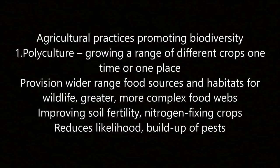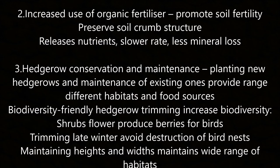Agricultural practices promoting biodiversity: (1) Polyculture — growing a range of different crops in one place provides wider food sources and habitats for wildlife, creating more complex food webs, improving soil fertility through nitrogen-fixing crops, and reducing pest build-up. (2) Increased use of organic fertiliser — promotes soil fertility, preserves soil crumb structure, and releases nutrients at a slower rate with less mineral loss. (3) Hedgerow conservation and maintenance — planting new hedgerows and maintaining existing ones provides a range of habitats and food sources. Biodiversity-friendly trimming in late winter avoids destruction of bird nests and maintains a wide range of habitats.